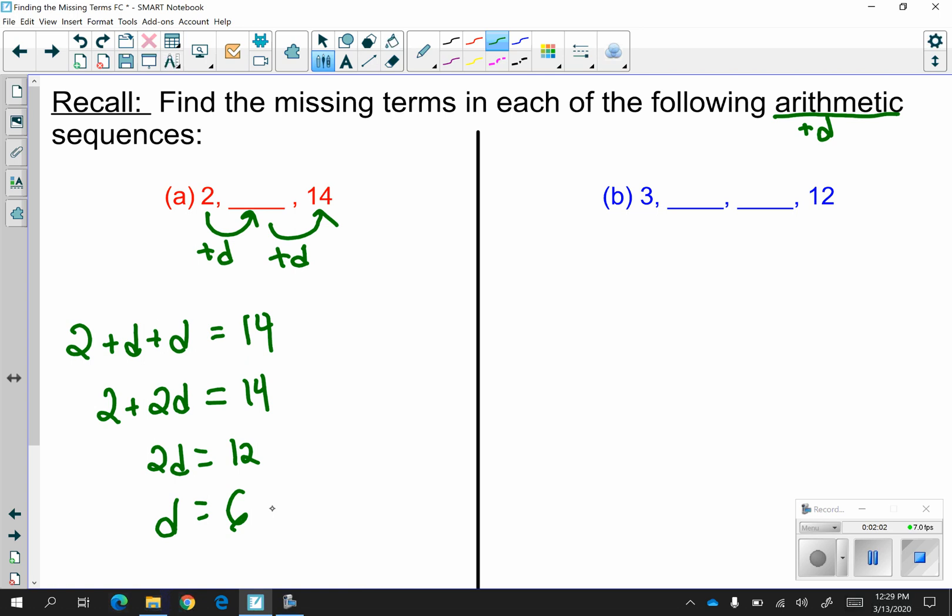Now 6 isn't the missing term because you would have to go back and do 2 plus 6 is equal to 8. And then you want to make sure it actually works. So you're going to do 8 plus 6 and that equals 14 to know that you did it properly. So going on to the next one.